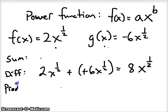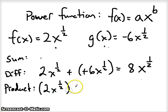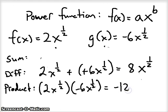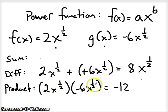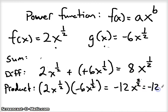Let's multiply the two power functions. When we multiply, we multiply the coefficients: 2 times negative 6 gives us negative 12. When multiplying bases with exponents, as long as the bases are the same, we add the exponents: one-half plus one-half gives 2 over 2, which reduces to 1. So we get negative 12x to the first, or just negative 12x.